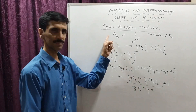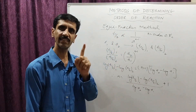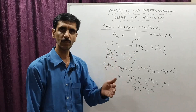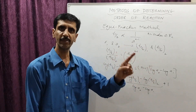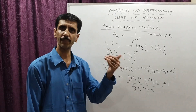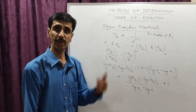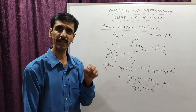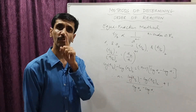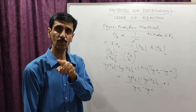Quick recap: The general relationship is T half is proportional to 1 upon a raised to n minus 1, where a is the initial concentration and n is the order of reaction. For two different initial concentrations a1 and a2 with corresponding half times T half 1 and T half 2, taking the ratio gives T half 1 upon T half 2 equals a2 upon a1 raised to n minus 1. Applying log rules: log of T half 1 minus log of T half 2 equals n minus 1 times log of a2 minus log of a1.